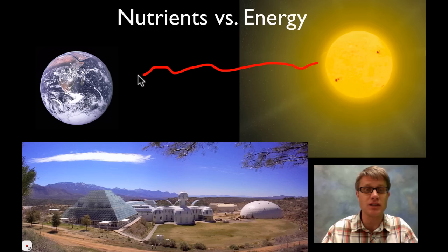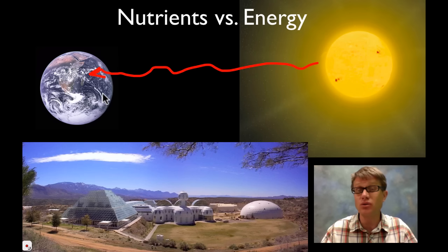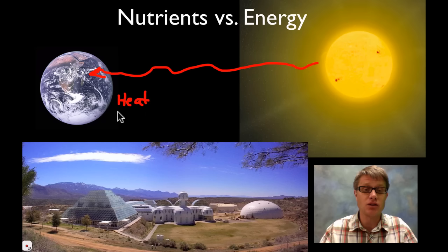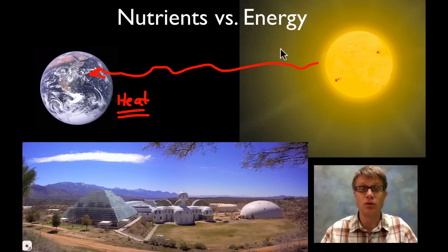It just travels as light. Once it gets to the earth it's eventually used, but it also eventually ends up being given off as something called heat. And so the way that energy gets to our planet moves in one direction.